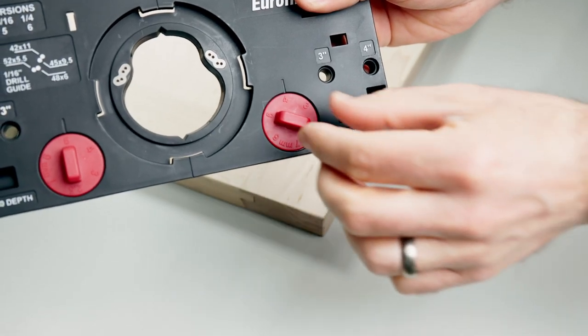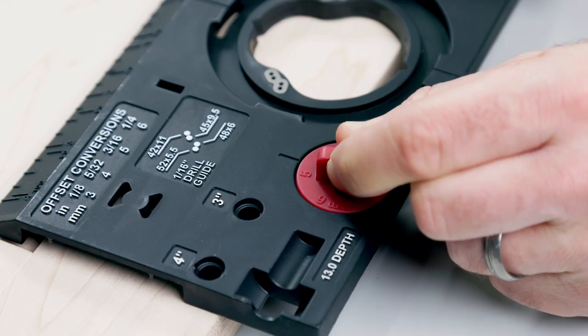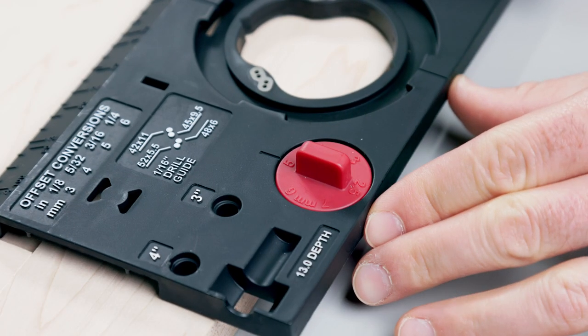Using the built-in edge alignment knobs, you can quickly select from one of the six most common hinge cup offsets for the most popular hinge styles and cup locations.